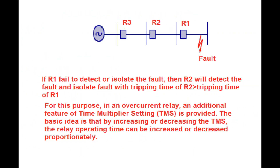In this case, the fault occurred at the point shown in the figure. If relay R1 fails to detect or isolate the fault, then R2 will detect and isolate the fault, with the tripping time of R2 greater than the tripping time of R1. Similarly, the tripping time of R3 must be greater than that of R2.